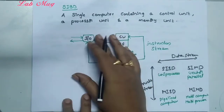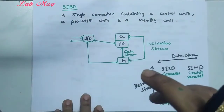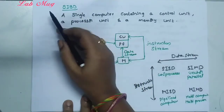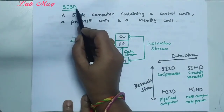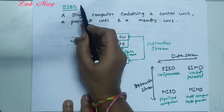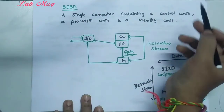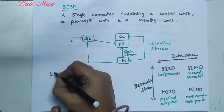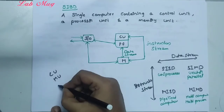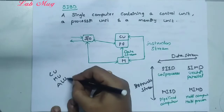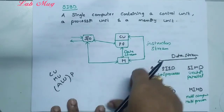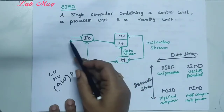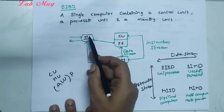Single Instruction Single Data means simply: one instruction stream and one data stream. That is the meaning of single instruction single data. So only one instruction and one data stream. This single computer contains one control unit, one processing unit, and one memory unit — those are the three main things: control unit, memory unit, and processing unit, that is the ALU.